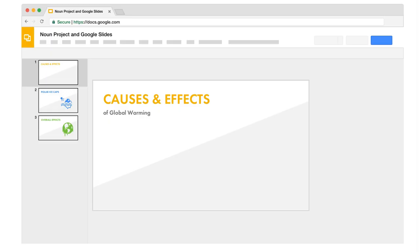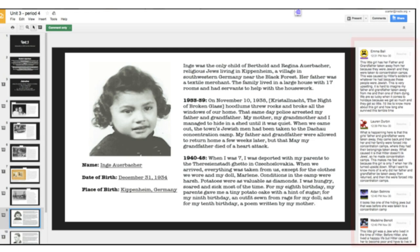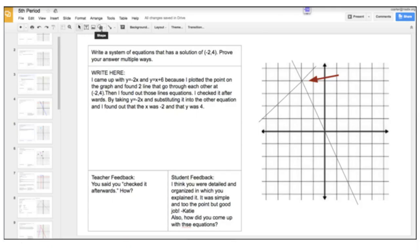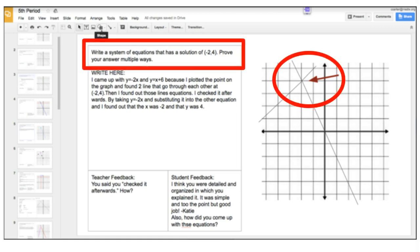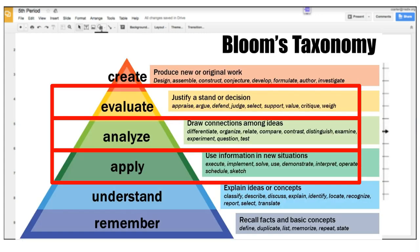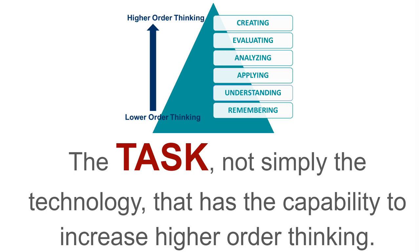For example, Google Slides may be discounted by some in thinking it's a tool that can only be used to accomplish low-level instruction, but depending on the task, it can also be used for deeper thinking — such as providing detailed critical peer feedback in which students are asked to evaluate and appraise one another's thoughts, or if used to solve a problem that has more than one correct answer, justify their thinking through text, and peer evaluate each other's work, which requires additional elements of analyzation through multiple sources of feedback. So to sum it up, it's the task, not simply the technology, that has the capability to increase depth of thinking.